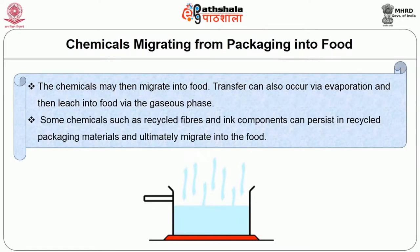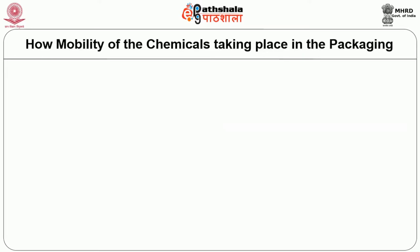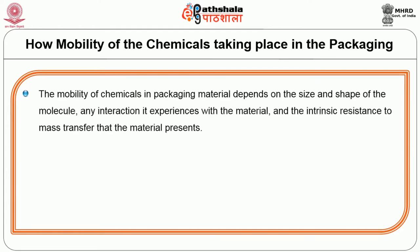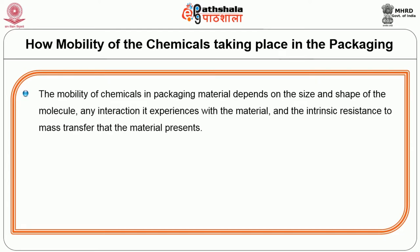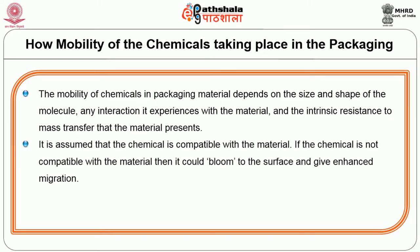Some chemicals such as those from recycled fibers and their components can persist in recycled packaging materials and ultimately migrate into food. The mobility of chemicals in the packaging material depends on the size and shape of the molecule, any interaction it experiences with the material, and the intrinsic resistance to mass transfer that the material presents. It is assumed that the chemical is compatible with the material; if the chemical is not compatible with the material, then it could bloom to the surface and give enhanced migration.